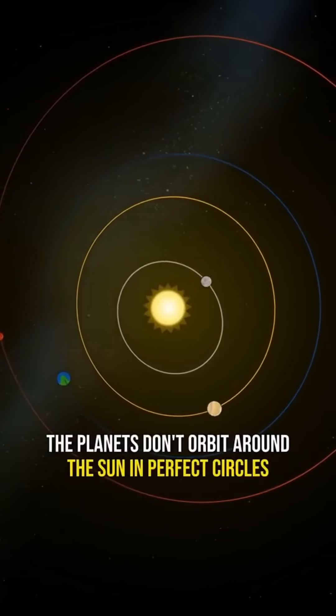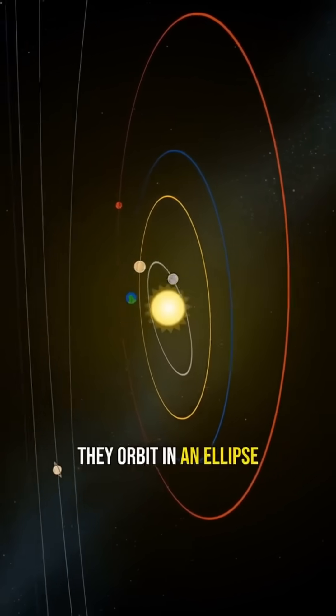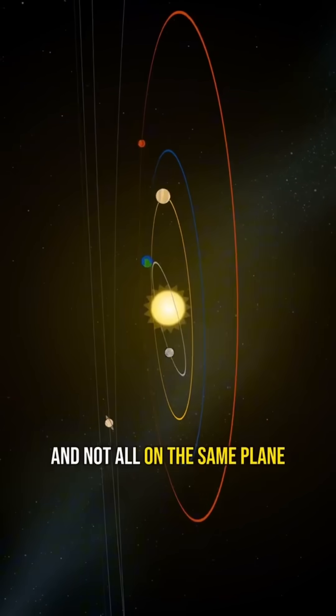As you likely know, the planets don't orbit around the Sun in perfect circles. They orbit in an ellipse, and not all on the same plane.